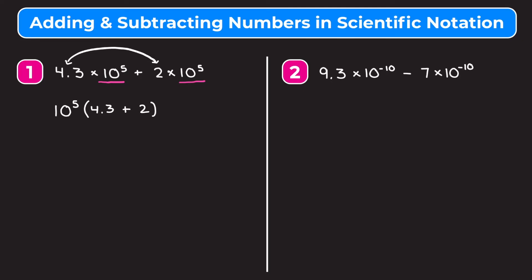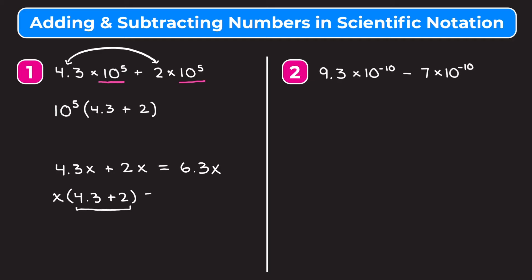If this doesn't make sense, I'm going to show you why this works using something more familiar: x's. It's similar to this — if we have 4.3 times x plus 2 times x, we can just add the two coefficients in front of the x. So we get 6.3x. The reason this works is because if we factor out an x, we have x times (4.3 plus 2), and order of operations says we add what's in the parentheses first, giving us x times 6.3, which is the same as 6.3x.